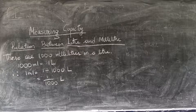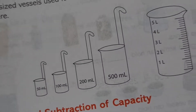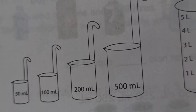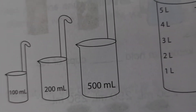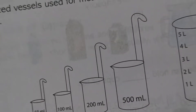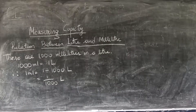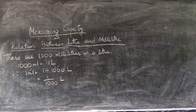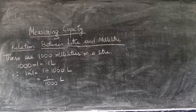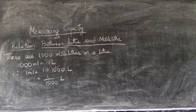These are the standard size vessels used for measuring liquids: 50 ml, 100 ml, 200 ml, 500 ml, and also in litres - 1, 2, 3, 4, 5. These are the standard size vessels used for measuring liquid. Remember that 1000 ml is equal to 1 litre, and 1 ml is equal to 1 upon 1000 litre. I hope you understood the relation between litre and millilitre.